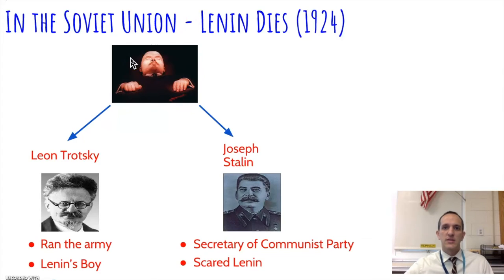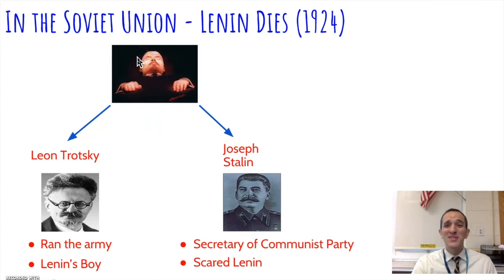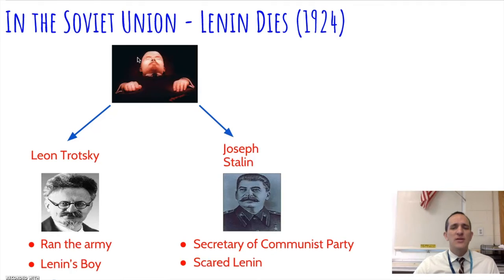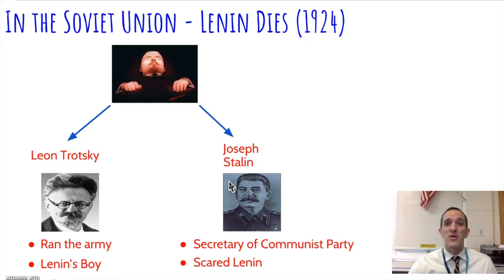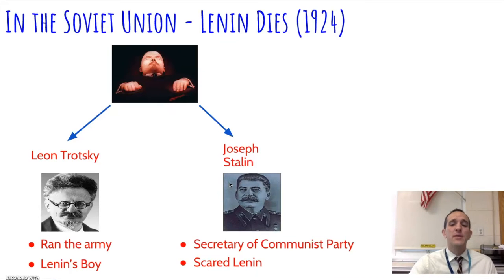Before his death, Lenin actually wrote a letter to the members of the Communist Party saying essentially: don't let Joseph Stalin become the leader of the Soviet Union. He didn't trust him, calling him power-hungry and warning that who knows what would happen if he became leader.